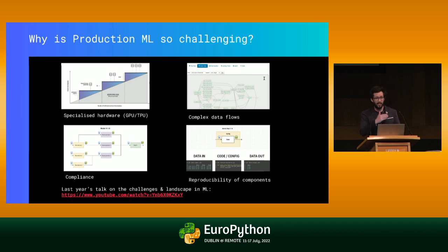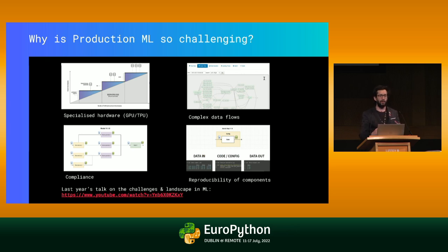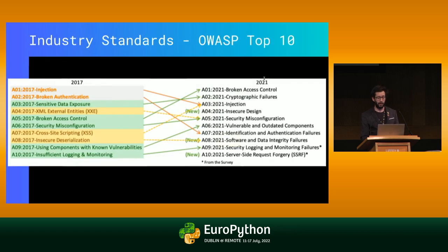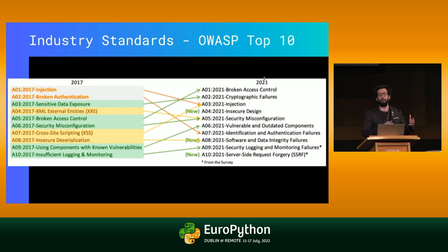Similarly, there are data dependencies as it flows through the system. That boils down into reproducibility of components — making sure that whenever you want to rerun a specific inference request, all components are atomic and reproducible, whether it's today or in a couple of weeks. Finally, there are compliance requirements and the burden they bring. When it comes to security, we can leverage a lot of the resources created in the general software space.